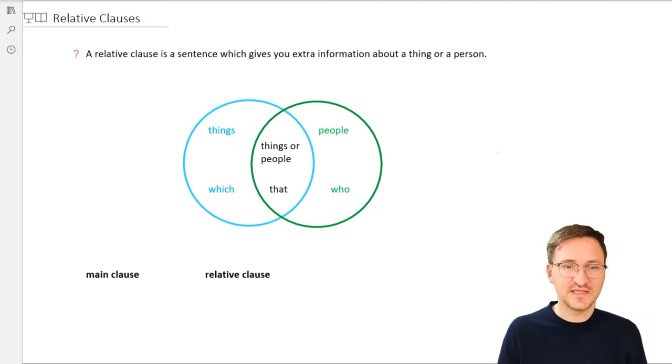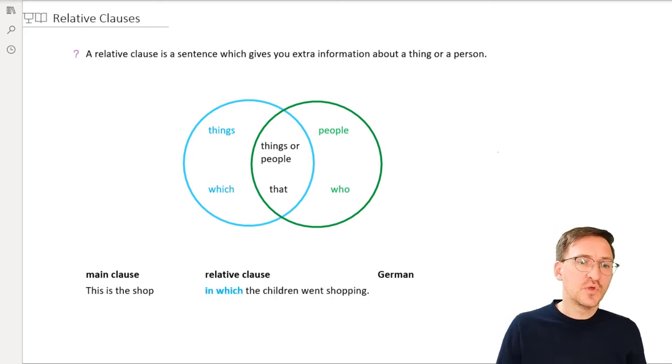Now, let's take a look at an example here. This is the shop. Full stop. This could be a sentence on its own. But we want to have a relative clause here. In which the children went shopping. Here we can see we use a preposition. In which the children went shopping. And the German sentence is really simple enough here. Das Geschäft in dem.